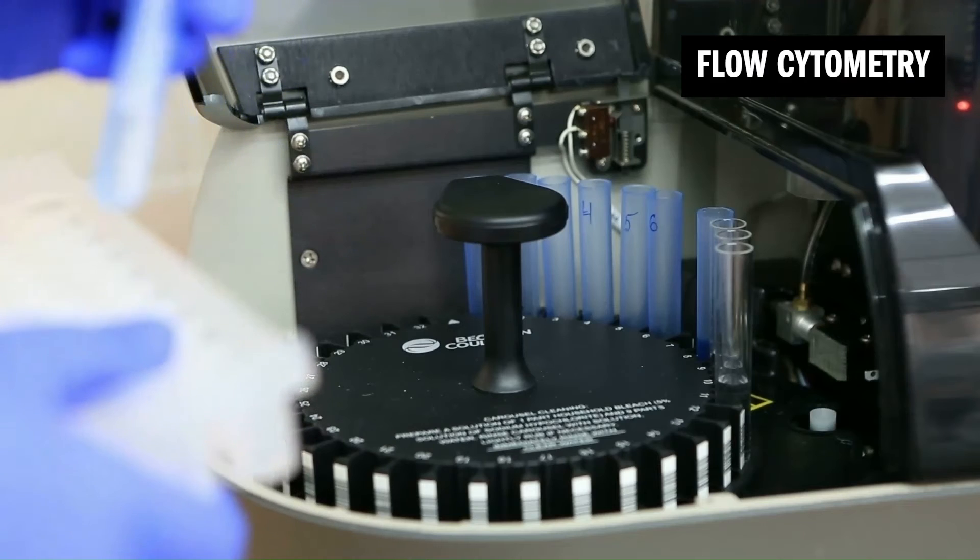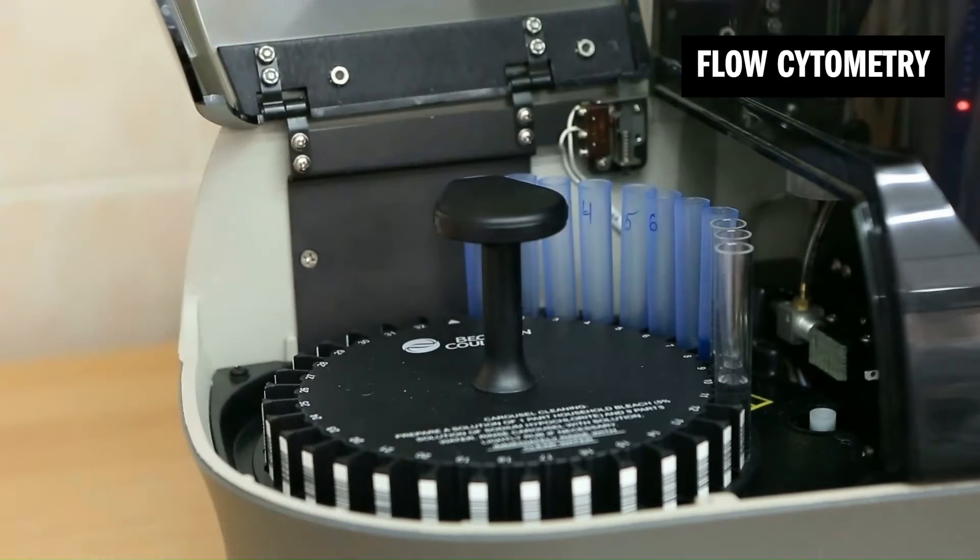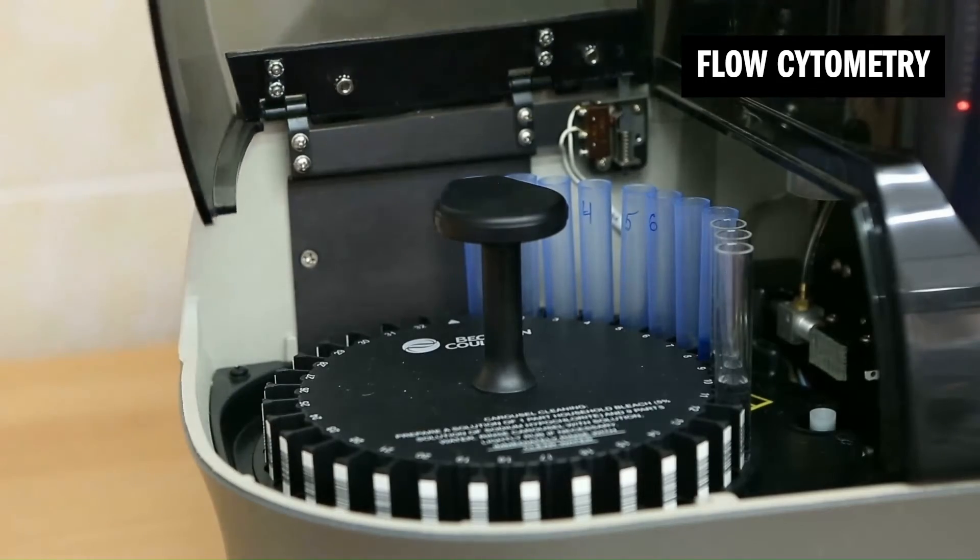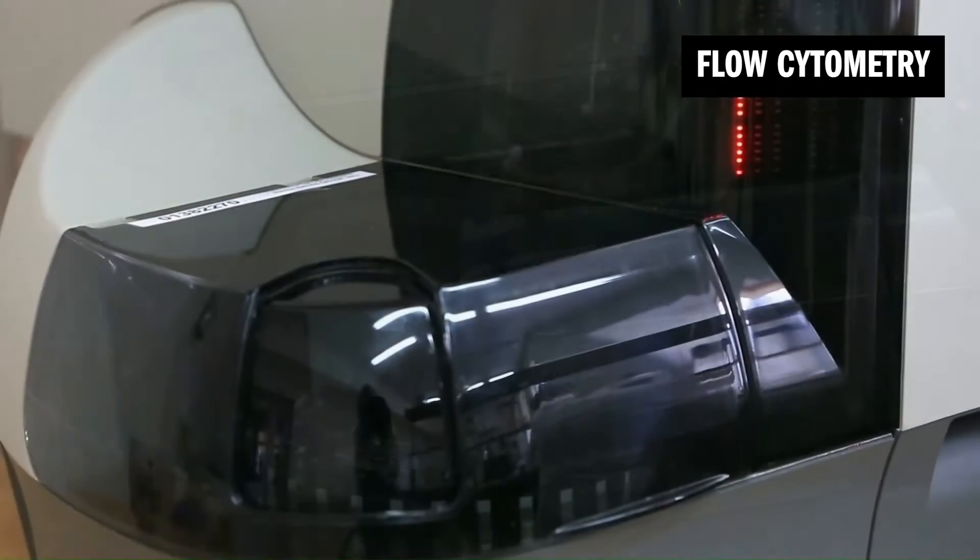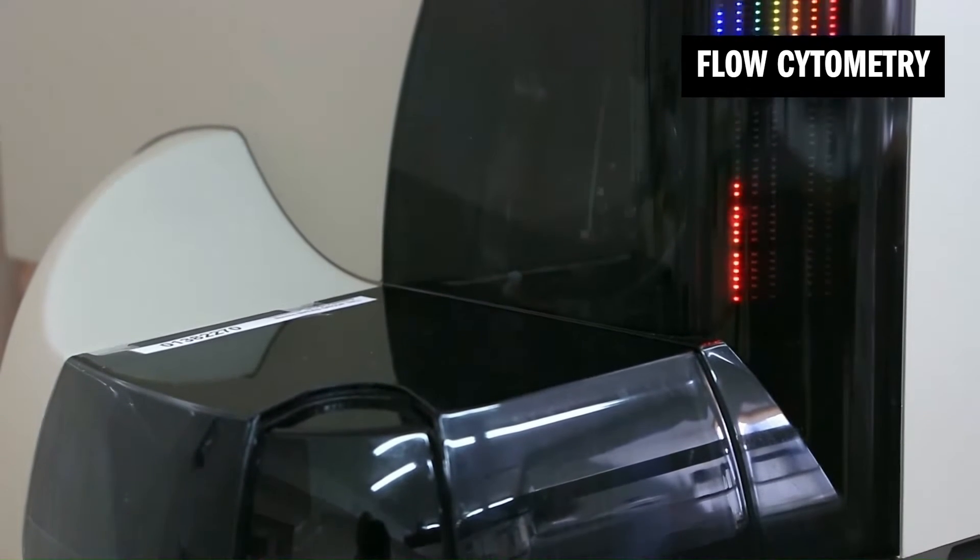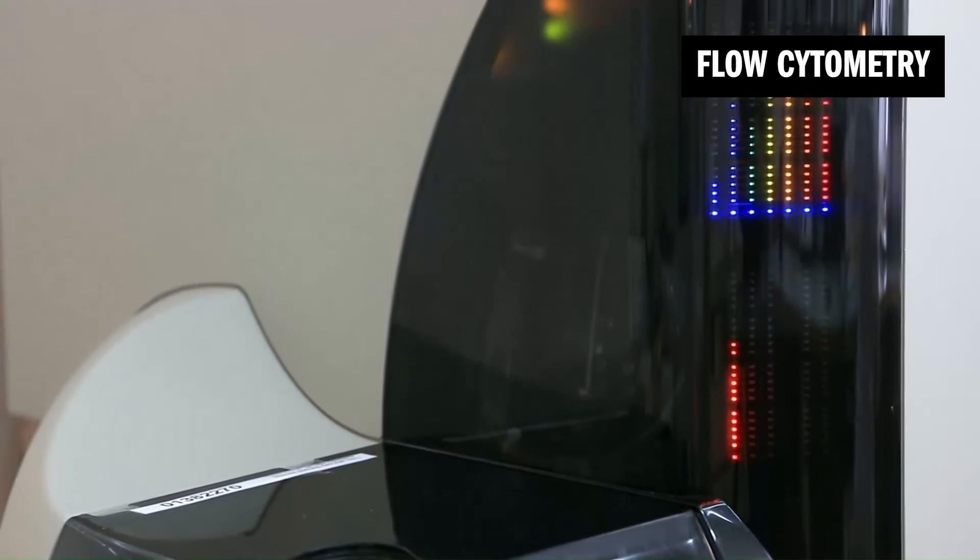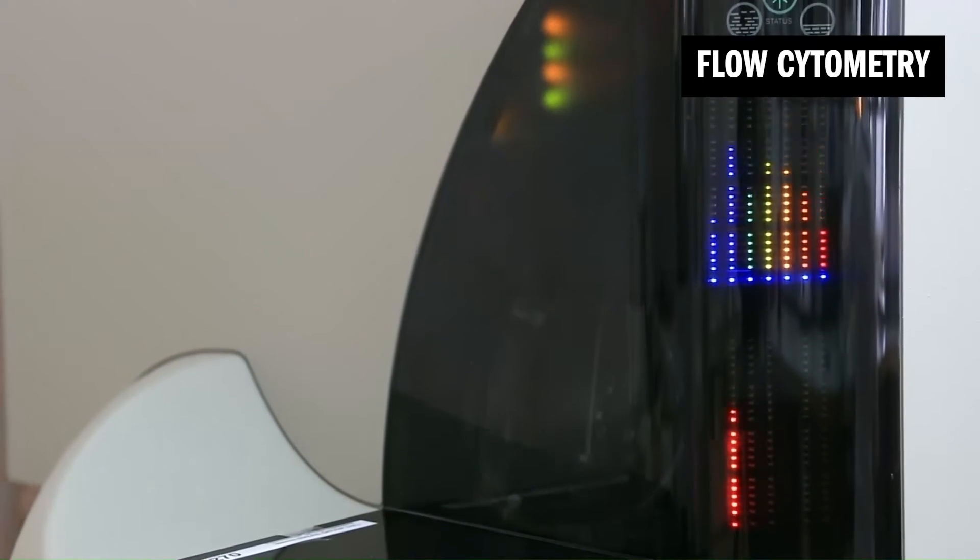Flow cytometry is used to examine the physical and chemical properties of cells and microparticles. Cells are typically suspended in a fluid stream, passing by a detector to reveal cellular information such as size, shape, and other detailed characteristics. Specialized cytometers can sort or even image the cells for further analysis.